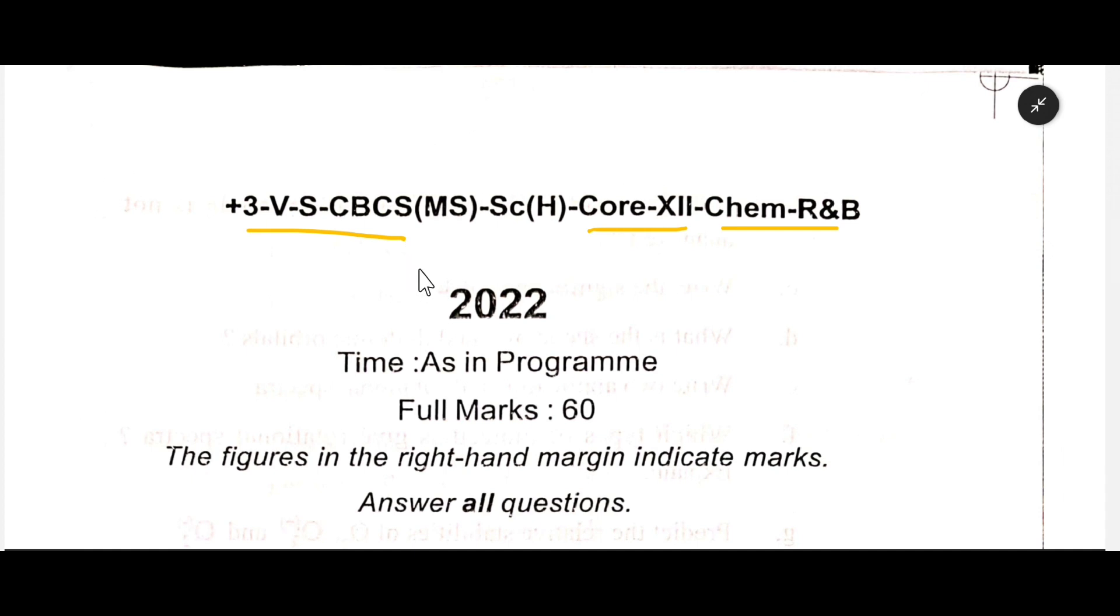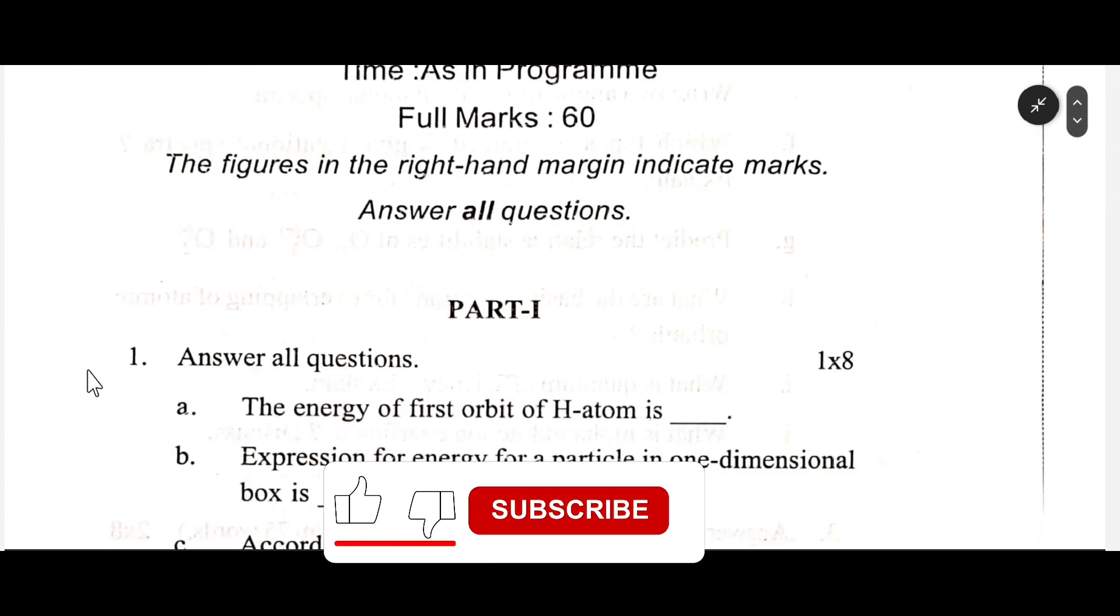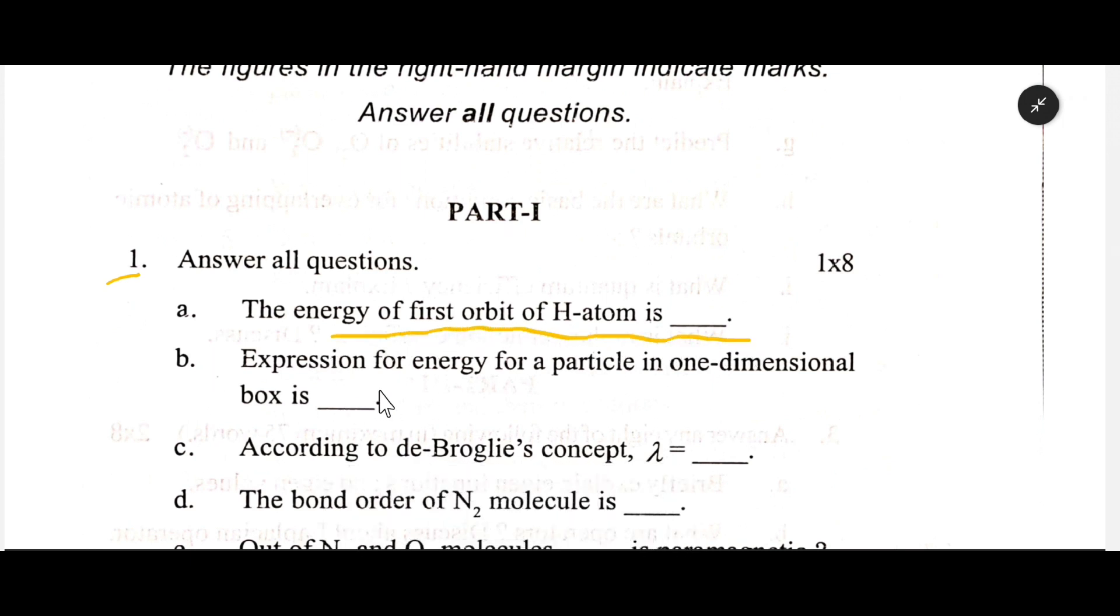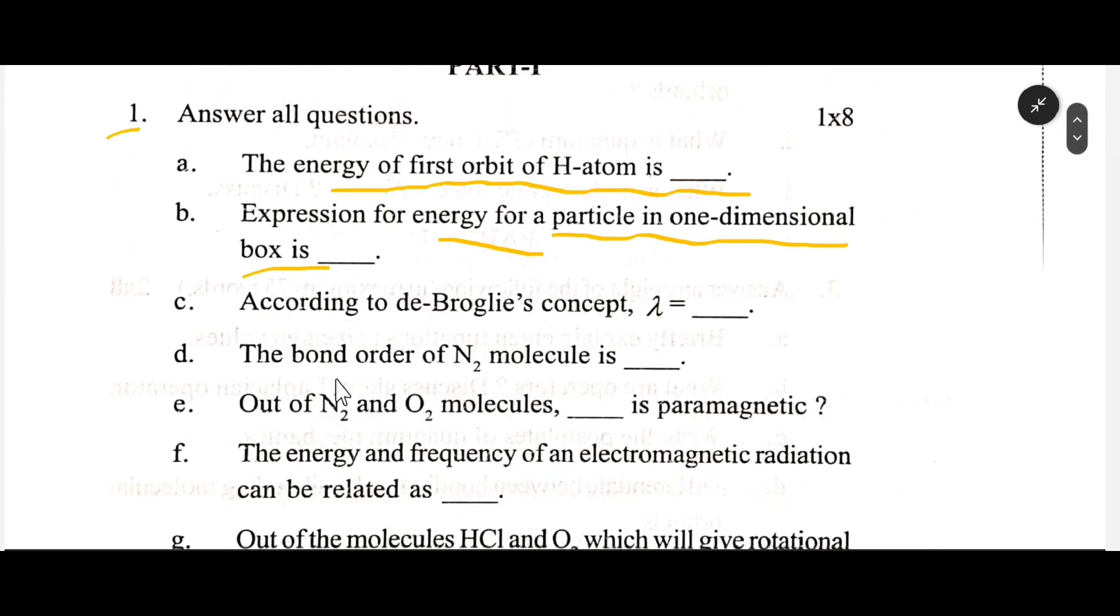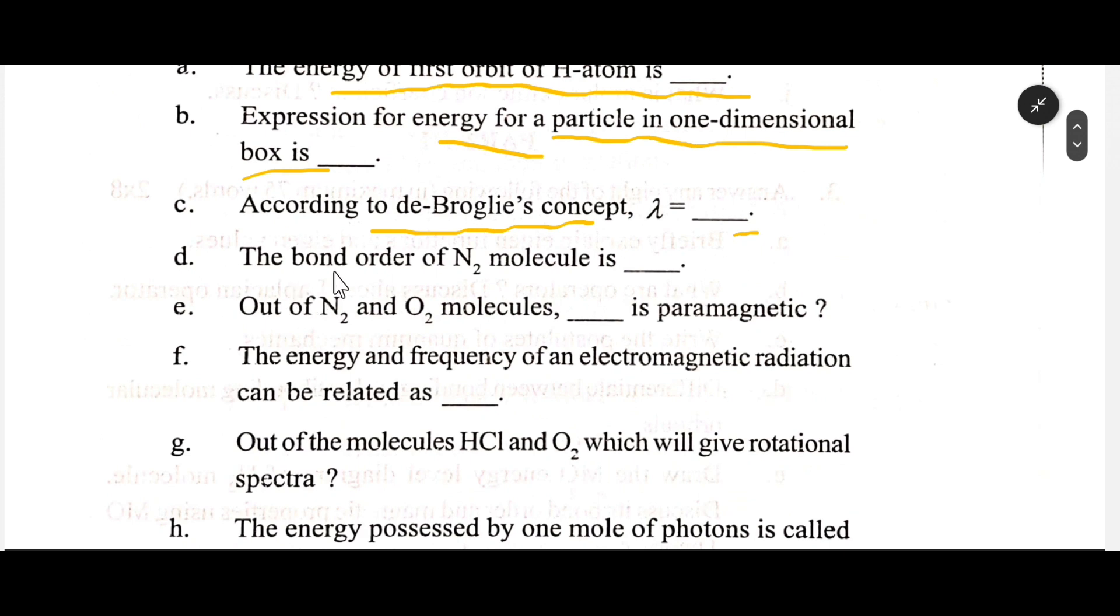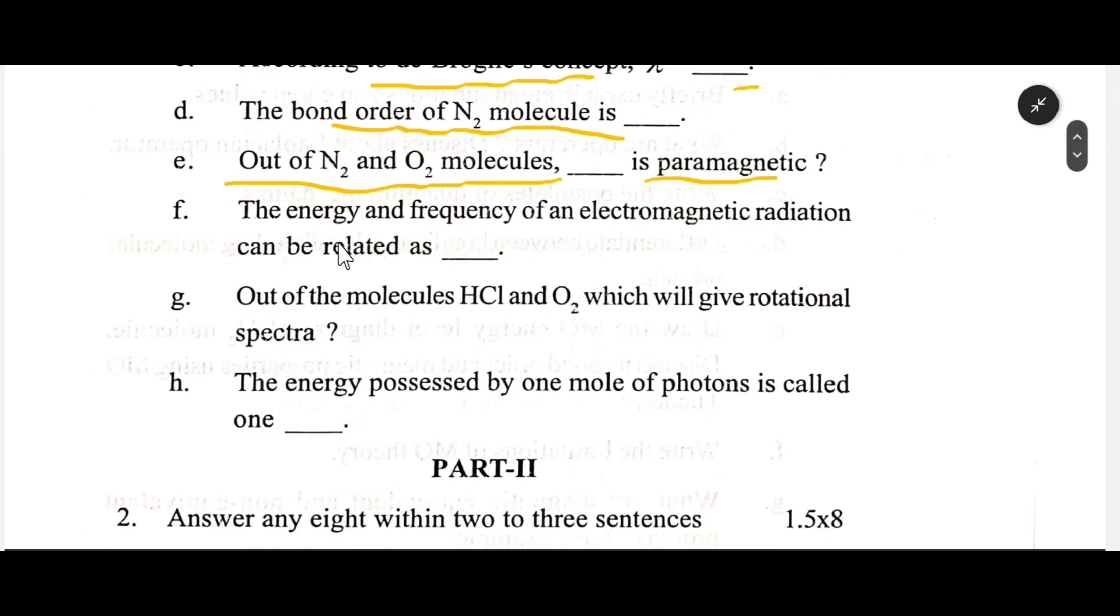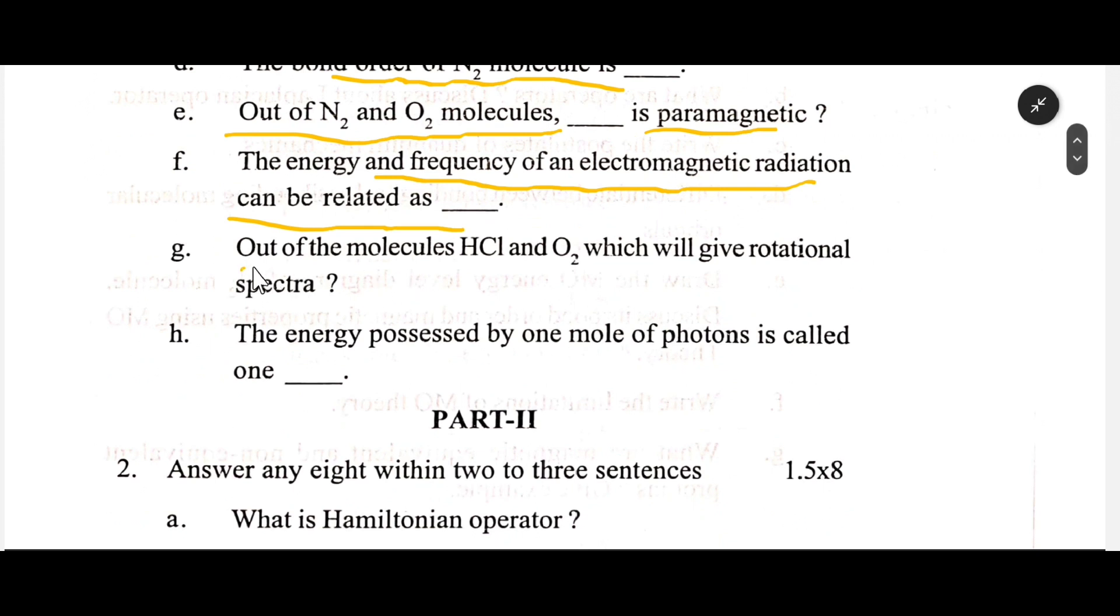Code 12 Chemistry, fifth semester. Part I: The energy of first orbit of hydrogen atom is blank. Expression for energy for a particle in one-dimensional box is blank. According to de Broglie's concept, lambda equals blank. Bond order of N2 molecule is blank. Out of N2 and O2 molecules, which is paramagnetic? The energy and frequency of an electromagnetic radiation can be related as blank. Out of the molecules HCl and O2, which will give rotational spectra?